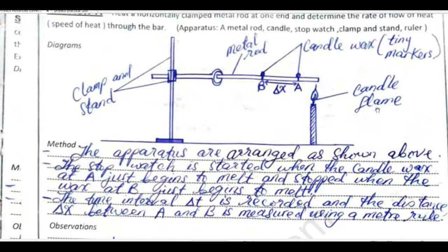So once you set up the experiment, you come up with your table and you start your stopwatch at point A. When it melts at point A, you start your stopwatch. At point B, probably you're going to name it as point 1, point 2, point 3, point 4, point 5, point 6, point 7, point 8, point 9, point 10, or A, B, C, D, E up to ten points.